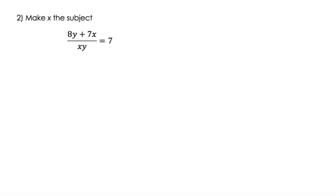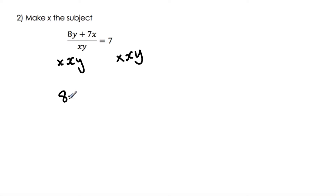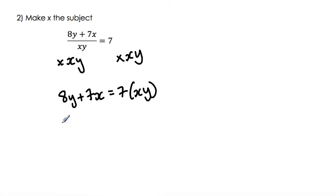Question 2: make x the subject. The equation is 8y plus 7x over xy equals 7. The first thing I'm going to do is multiply both sides by xy. This will help me to eliminate the denominator xy. So what we should have now is 8y plus 7x equals 7(xy). I'm then going to expand the brackets, so we have 8y plus 7x equals 7xy.